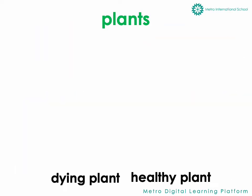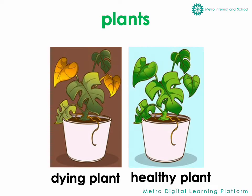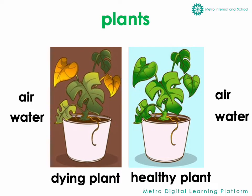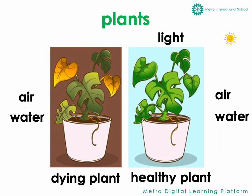What are some characteristics of plants? Plants have the air they need. These plants also have water. These plants are dying — why do you think they are dying? This plant has been growing in the light. This plant has been growing in the dark. Why did it not survive?